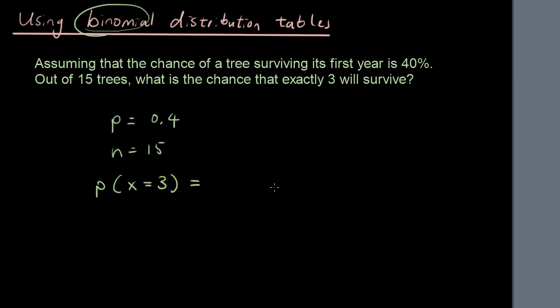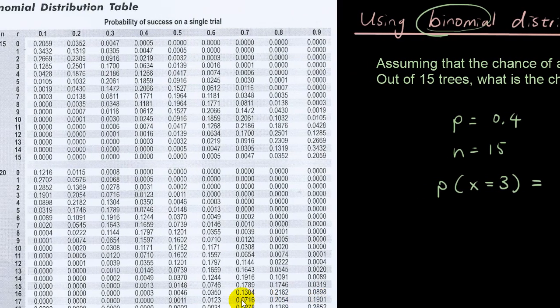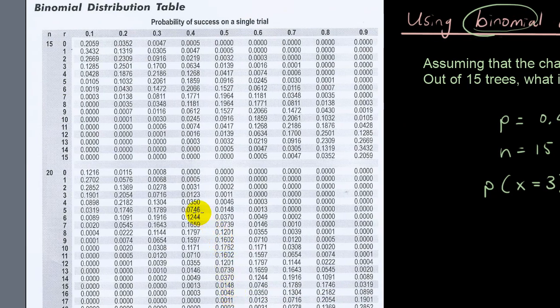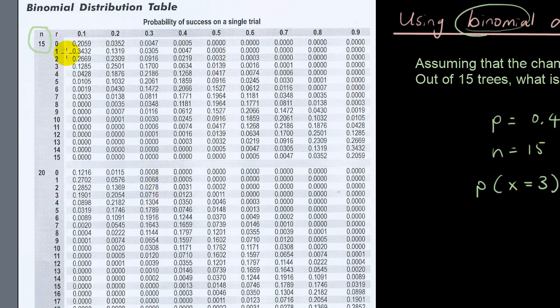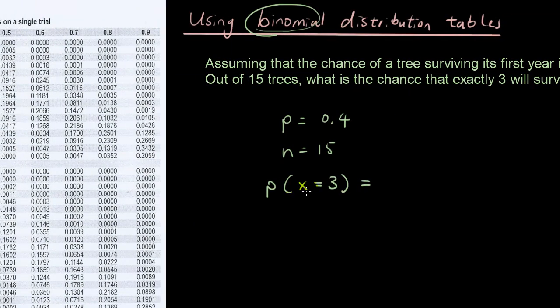So instead of using the formula, today I want to introduce you to the binomial distribution table. So what you do with this table is that you just simply look for n, which in this case is 15. So out of this table I've just done a screenshot of it. But down the left hand side, you're going to see different numbers for n. So I have n equals 15, n equals 20. So obviously we don't need this one because in our example n is 15. So you go to n is 15 and then it says x is equal to 3.